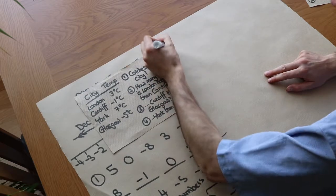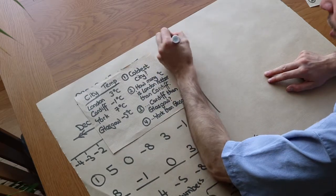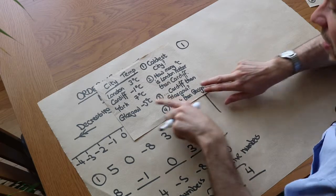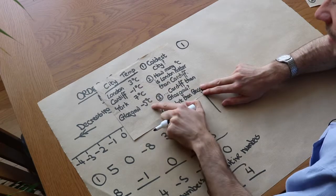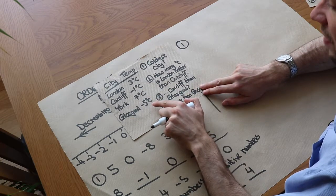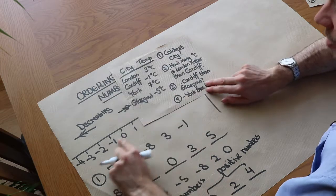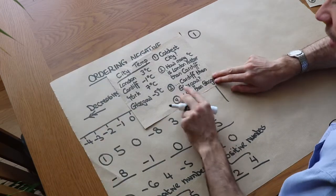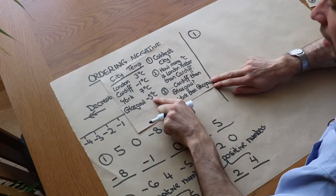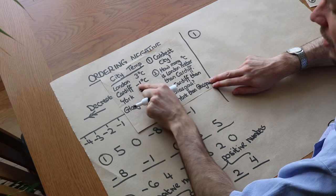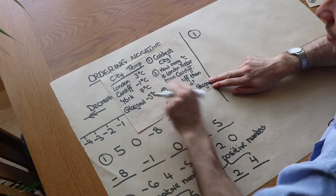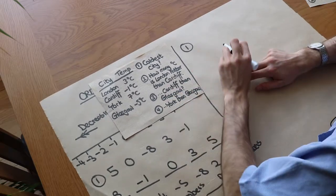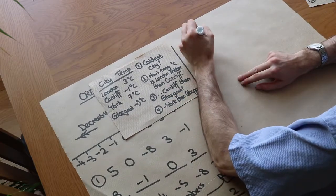Firstly, we want to know which is the coldest city. It's going to be one of the negative numbers, and we want the one with the biggest number after the minus because it'll be furthest to the left of zero. We can see that Glasgow is the coldest — minus five is much further away from zero than Cardiff's minus one. So the answer is Glasgow.